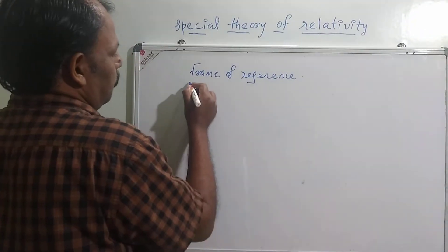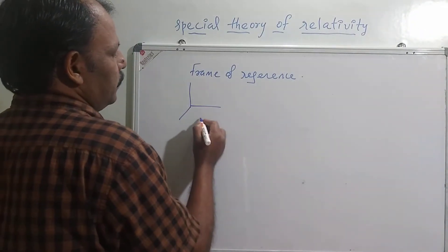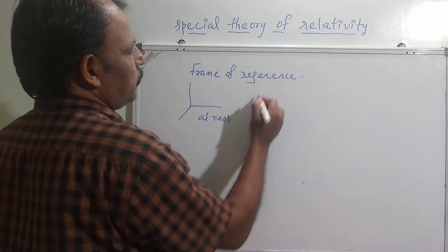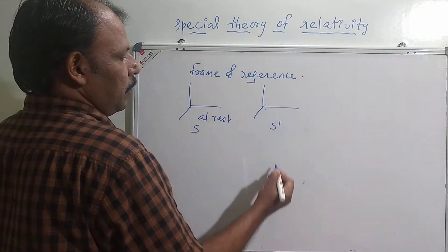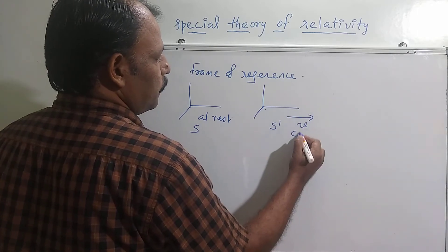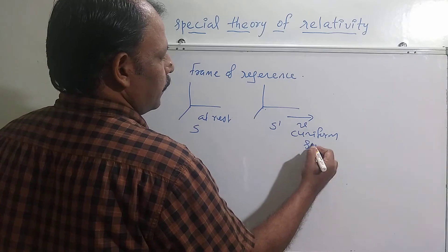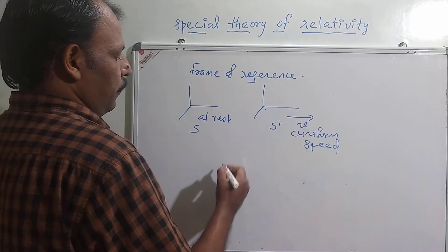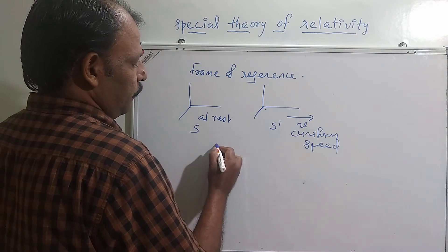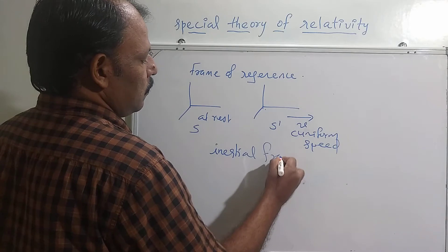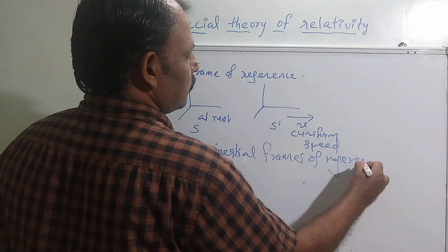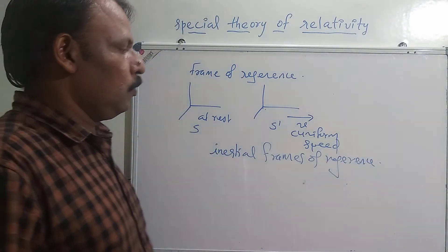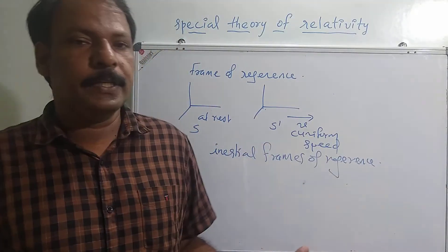If the frame of reference is at rest or moving with uniform speed — consider one frame S which is at rest, and another frame S prime which is moving with uniform speed V — then these frames of reference are called inertial frames of reference. So they are either at rest or moving with uniform speed relative to each other.